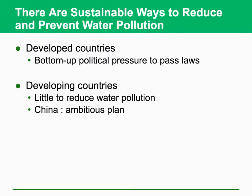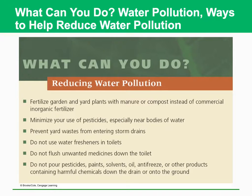There are sustainable ways to reduce and prevent water pollution. In developed countries, bottom-up political pressures to pass laws are required. In developing countries, there should be activities to deal with not only point source pollution but also non-point source pollution. There are a lot of ideas — we can reduce water pollution by reducing the use of fertilizers, reducing the use of pesticides, and improving toilet systems. The control of water pollution requires new ideas, innovative approaches, and this is why we have to learn that in this class.